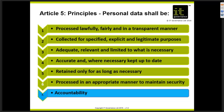Principle two: processing must be collected for specified, explicit, and legitimate purposes. You need to specify what the purpose of collecting the data is — provision of services, healthcare, education — and that purpose must be explained in your fair processing statements. Principle three is the minimization principle: information must be adequate, relevant, and limited to what is necessary. Organizations often collect unnecessarily broad data — for example, competitions asking for date of birth or home address when it isn't needed to process the competition.